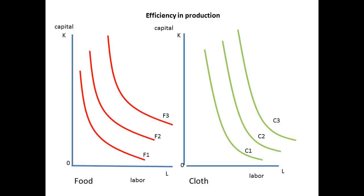The total supply of labour is OL, and the total supply of capital is OK in each case. Remember that labour will be in units for time period. It is unlikely that the two goods would have identical isoquant curves, so we have shown a small difference here.